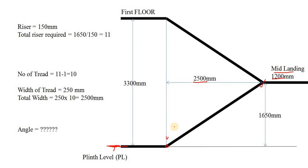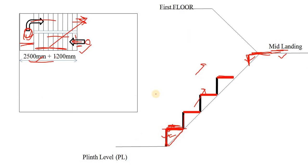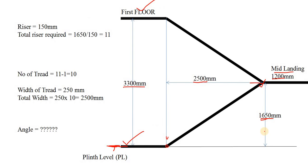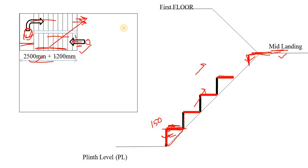You have to start from the floor-to-floor height. The normal floor-to-floor height is 3.3 meters. So if the mid landing is at the midpoint, the mid height is 1.65 meters, which is simply 3.3 meters divided by 2. For each riser, you gain 150 mm — this is the standard height of any riser. So to achieve 1650 mm, simply divide: 1650 divided by 150 gives a total of 11 risers.